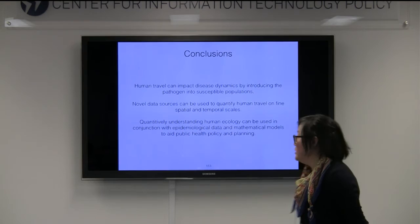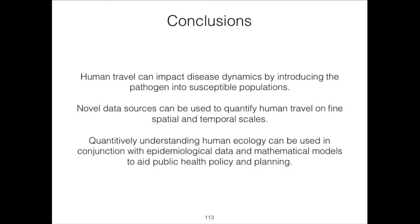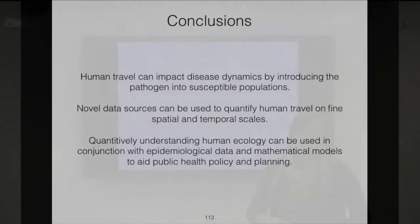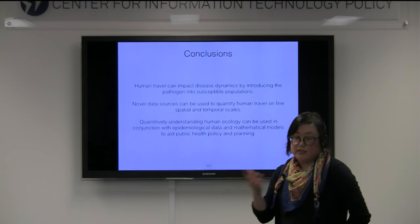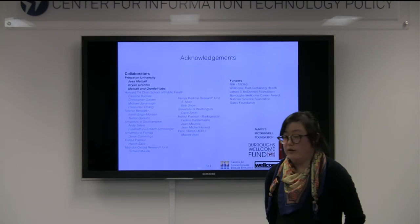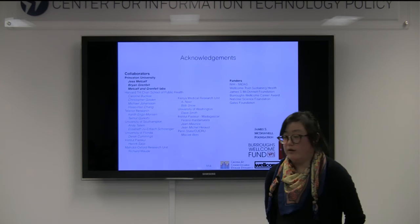In conclusion, human travel impacts disease dynamics by introducing the pathogen into susceptible populations — and I talked mostly about mosquito-borne diseases, but this is true for lots of other ones too. An understanding of actual human travel patterns and behavior can be used on fine and coarse spatial and temporal scales to inform our disease models and inform disease prediction. Ultimately, the hope is that these can all be used for public health planning and policy. There are a lot of people I work with on this, particularly at Princeton and in EEB, and a very large number of funders.